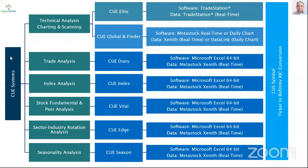In the Q Masterclass, we are going through all the Q systems and underlying platforms one by one. Today I am going to discuss QVITAL, the system for fundamental and peer analysis. In the latest QVITAL, Q symbol has been added, so we don't have to run Q symbol separately. We are able to convert ticker symbols into definitive symbols in QVITAL itself, and we also have a button to import TradeStation scan or radar data into QVITAL using the smart action button.